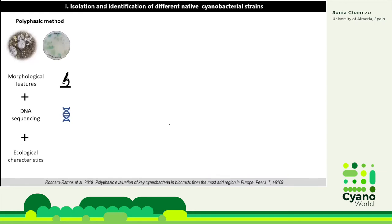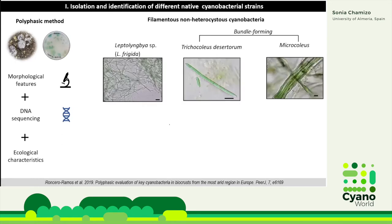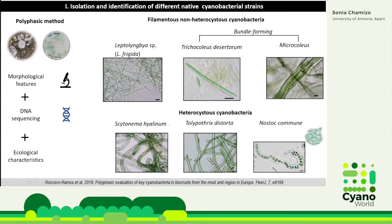We collected biocrust samples from these three different areas and isolated different native cyanobacteria species. We applied a polyphasic method in which we use the morphological features of the strains combined with molecular analysis with DNA sequencing, and also the ecological characteristics. We combined all of these methods to identify the cyanobacteria strains present in the biocrusts, and we identified different species belonging to different groups. Within the filamentous non-heterocystous cyanobacteria, we isolated a species from the genus Leptolyngbya frigida, and also belonging to the bundle-forming cyanobacteria, we isolated Trichocoleus desertorum and Microcoleus.